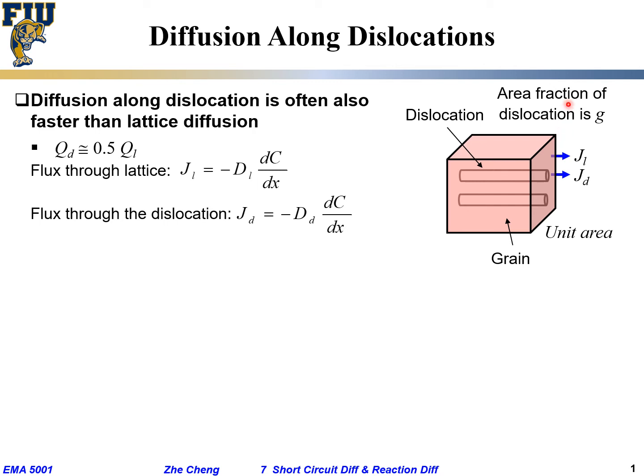If we assume the total area fraction of this dislocation is g, which means what? If I look from this in cross section, the total area of my dislocation in the area of this grain, the total area of the dislocation to the total area for this grain is g. Typically it's a very small number, 10 to the power of negative 7.